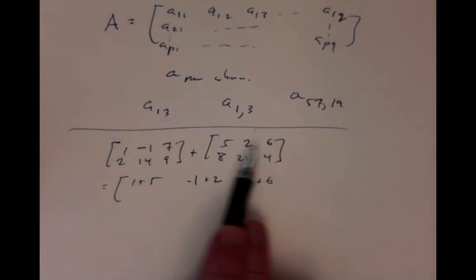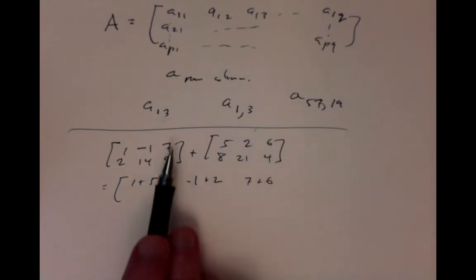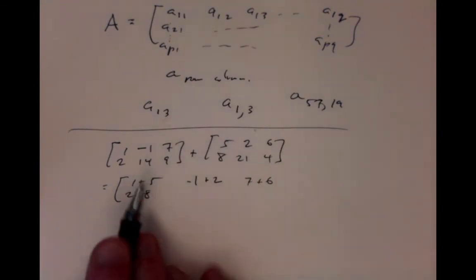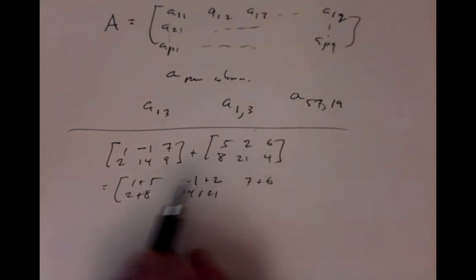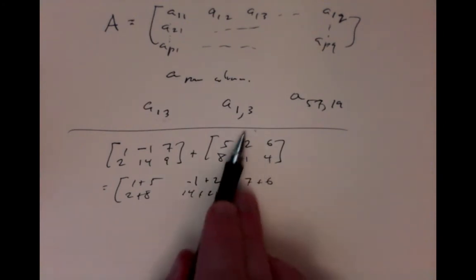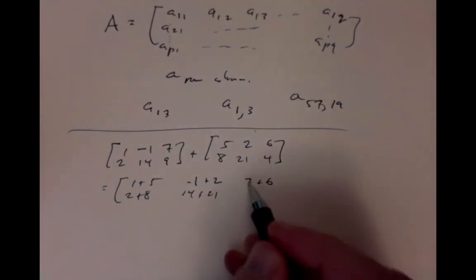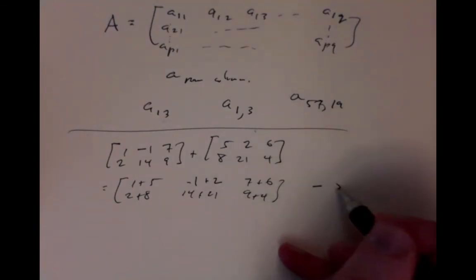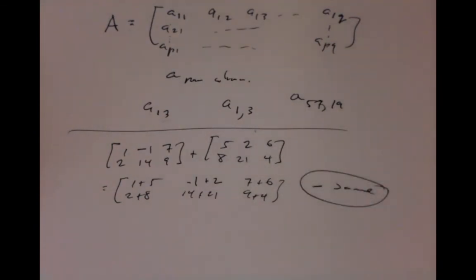The 7 is in the first row, third column. The 6 is in the first row, third column. So you add the 7 to the 6 because they're in the same position. 2 plus 8, 14 plus 21, because the 14 is in the second row, second column. 9 plus 4. Subtraction is exactly the same story. If I had a minus sign here, I'd put minus signs in wherever I'd done the additions.